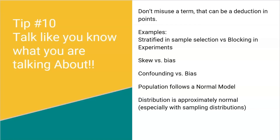They can actually take points off if you misuse a term. For example, stratified is the term we use when selecting samples, while blocking is very much like stratified but is what we do in experiments. A lot of times students will say something is skewed when they mean biased. Skewed is the shape of a quantitative distribution graph. Bias is when your question or wording could lead to answers that don't reflect the truth. So don't misuse terms.